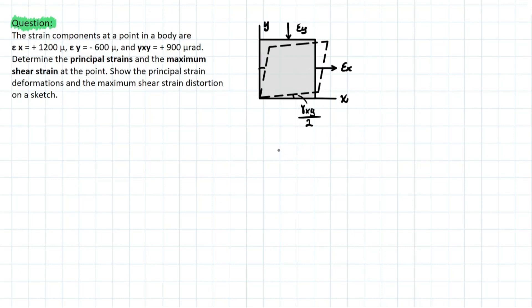So the problem that we're going to be solving today is as follows. The strain components at a point in a body are normal strain εx equals positive 1200, and we remember that it is unitless, but we're considering 10 to the negative 6 power for micro. Similarly, we have εy or normal strain y equals negative 600, and the shearing strain xy is plus 900 microradians.